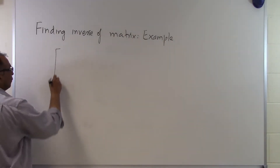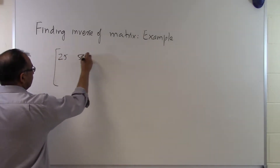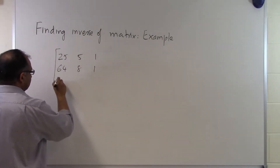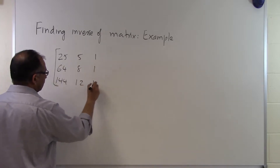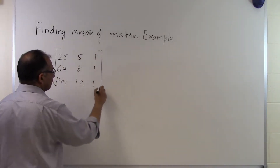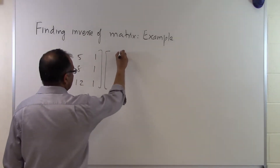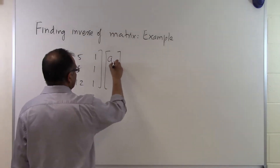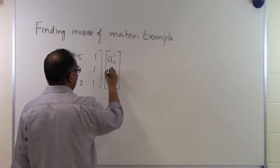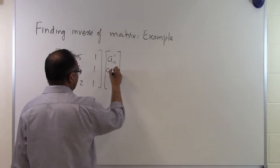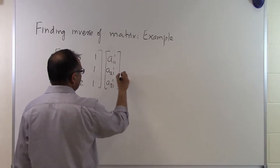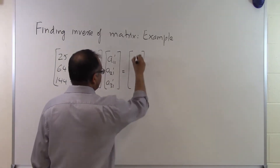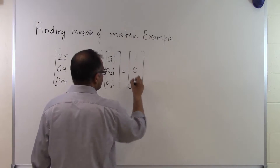So what we have is the matrix 25, 5, 1; 64, 8, 1; 144, 12, 1. The first column of the inverse matrix is A11', A21', and A31', and that will be equal to the first column of the identity matrix, which is 1, 0, 0.